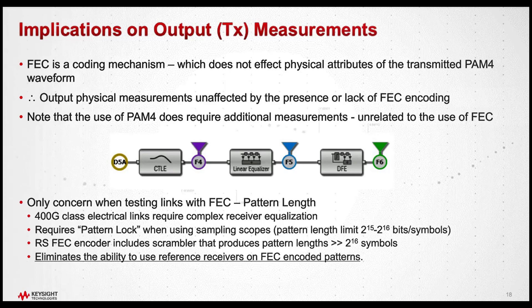Pattern locking the data has a requirement that there is a maximum pattern length size that we can lock to with a sampling scope. Depending on the instrument, it's either 2^15 or 2^16 symbols. So the pattern has to repeat — has to be shorter than that length — in order for the pattern lock to work. Pattern lock is necessary to implement the precision filtering required for the reference receiver.